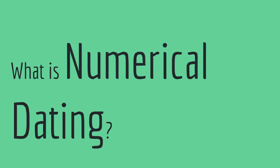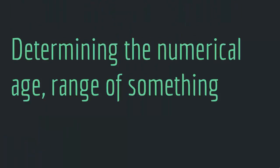So what is numerical dating? Well, numerical dating is determining the numerical age or range of something. So when we look at a rock, a fossil or any geological feature, we determine the numerical age or the numerical range of that thing.